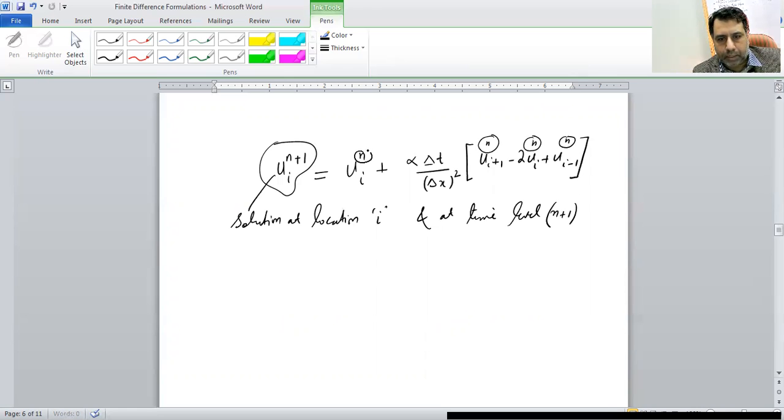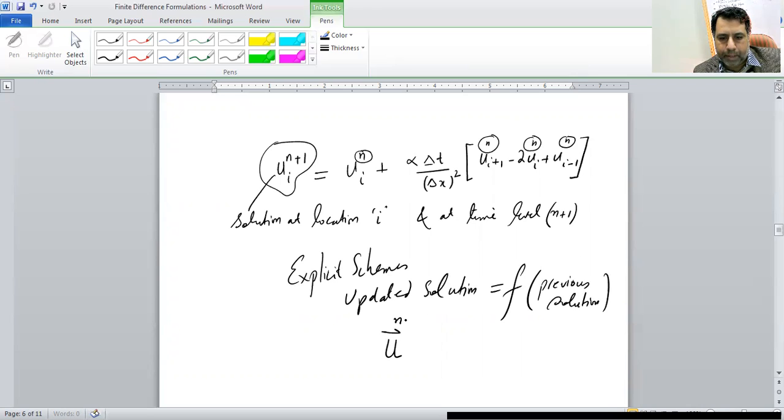All indices are n. So such kind of schemes where all the information comes from the previous time level or from the previous iteration, they are known as explicit schemes. In explicit schemes, the updated solution is a function of previous solution. The solution vector at time level n plus one is a function of solution at the time level n. This is the meaning of explicit scheme. So FTCS is an explicit scheme.